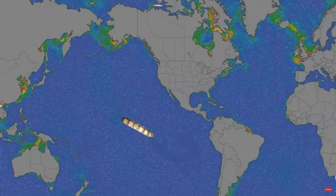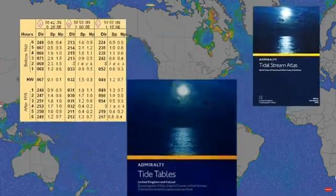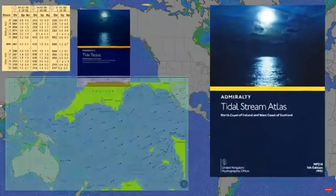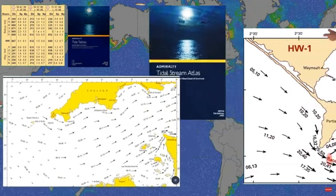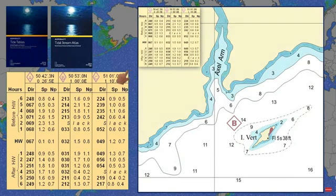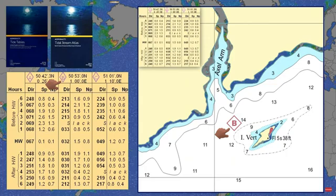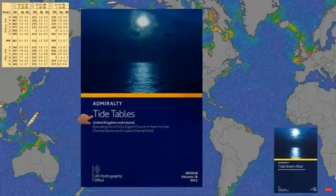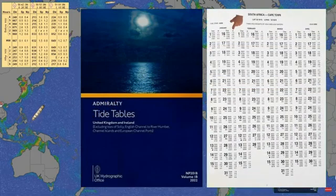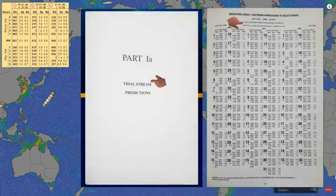On board there are several methods to determine the set and drift: through tidal stream atlas, tidal diamond, and tidal tables. Tidal stream atlas provides visual representations of the tidal streams in a particular area over time, showing both the direction and speed at different tidal stages. Tidal diamonds can be found on nautical charts; these give the set and drift for specific locations at different times relative to high water, providing precise information based on the tidal cycle for the exact area around the diamond. Tidal tables offer comprehensive tidal information, including predictions for the height of high and low water detailed in part 1, and tidal stream predictions available in part 1a of the tables.